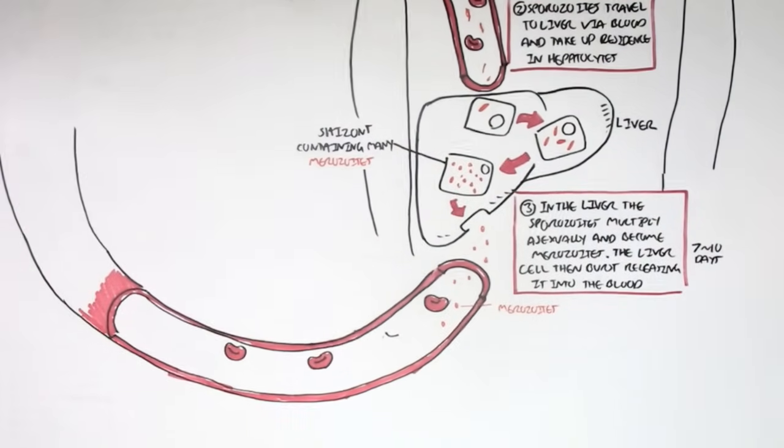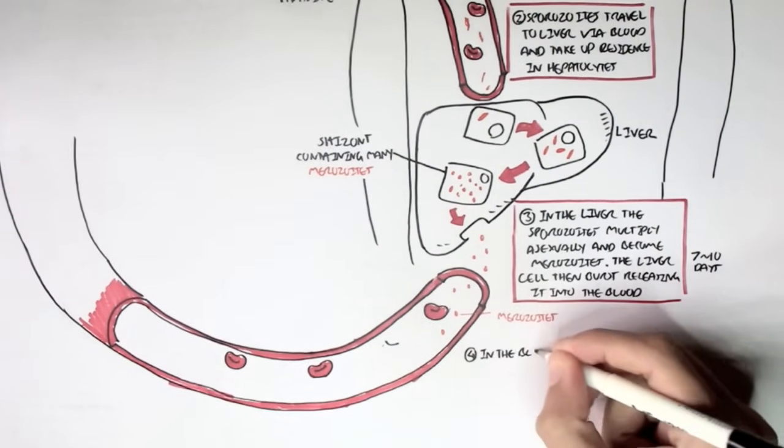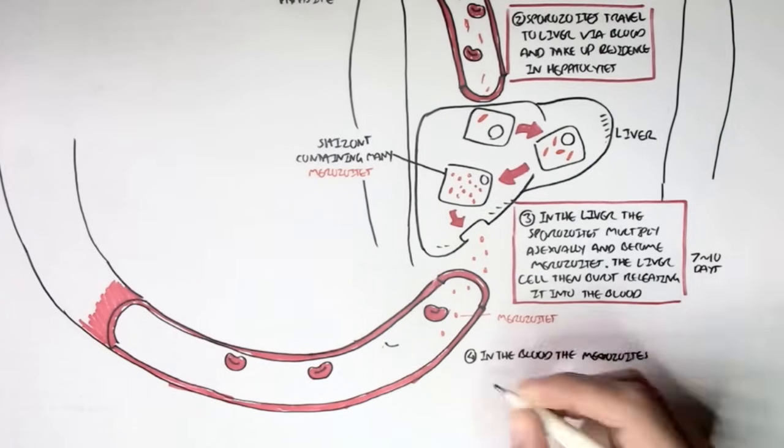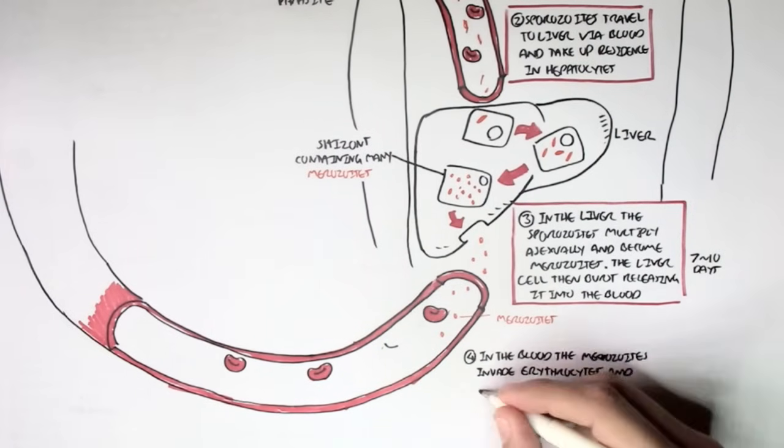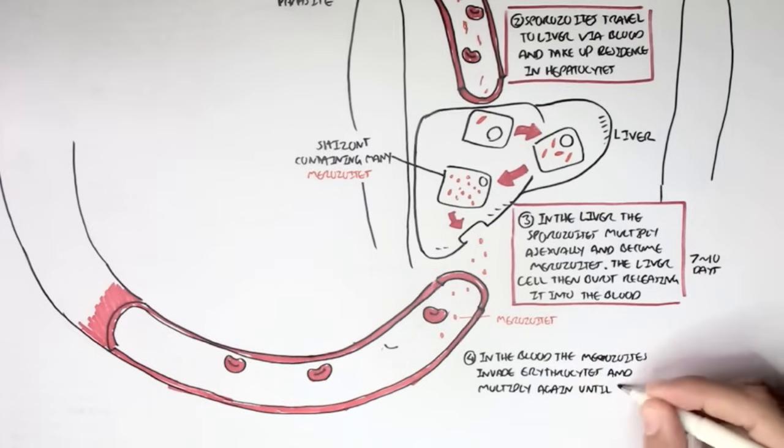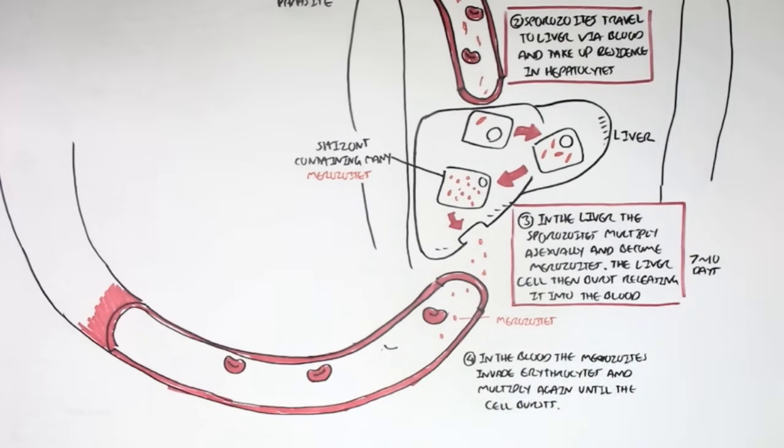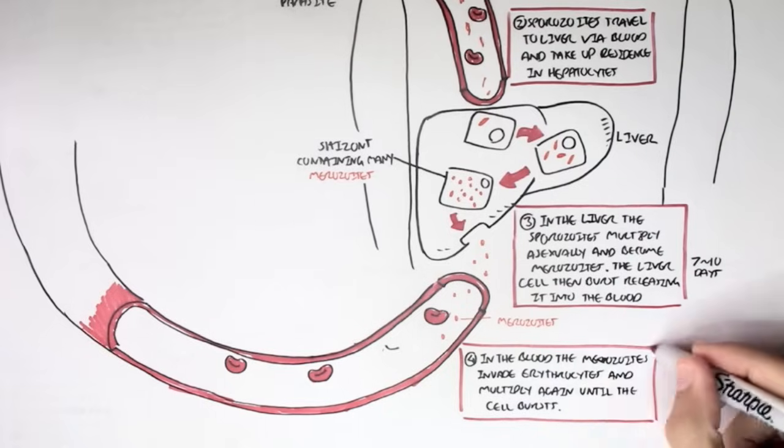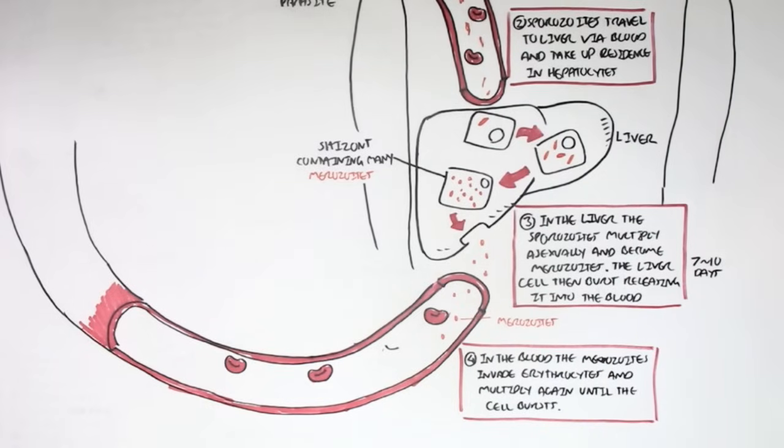So, here in the blood, we have this merozoite. Now, in the blood, all these merozoites will begin invading erythrocytes, the red blood cells, and multiply again within the red blood cells to form many more merozoites, until the red blood cells burst, releasing them into the bloodstream.